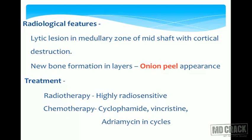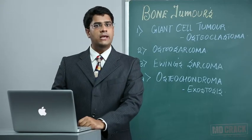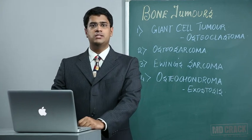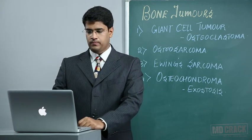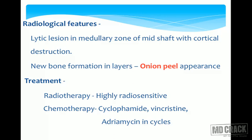Treatment of Ewing sarcoma involves chemotherapy and surgery. Most tumors are excised, but importantly, Ewing sarcoma is treated classically with radiotherapy because it is a highly radiosensitive tumor — this is an important MCQ point. Chemotherapy drugs commonly used are cyclophosphamide, vincristine, and adriamycin, given in cycles.